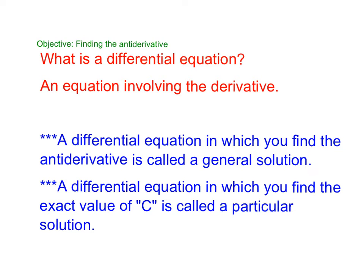So a differential equation in which you find an antiderivative is called a general solution. One where we actually figure out what C is is called a particular solution, and those words are used in these problems. So find the particular solution means we're going to figure out what our C is. Find the general solution, we're going to put a plus C in our answer.